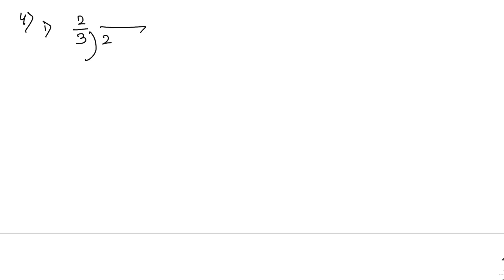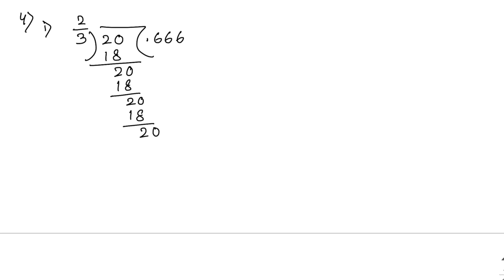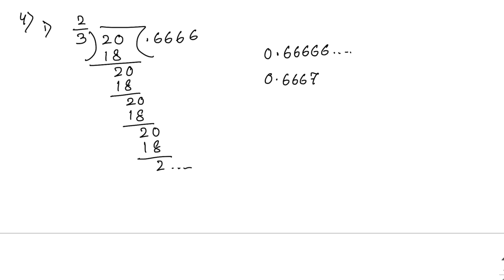First one: 2 by 3. Dividing gives repeating digits: 0, then 6, 3 is 18, again 20, again 18, and so on. Correct to four decimal places, the answer is 0.6667 because the last digit is greater than 5.